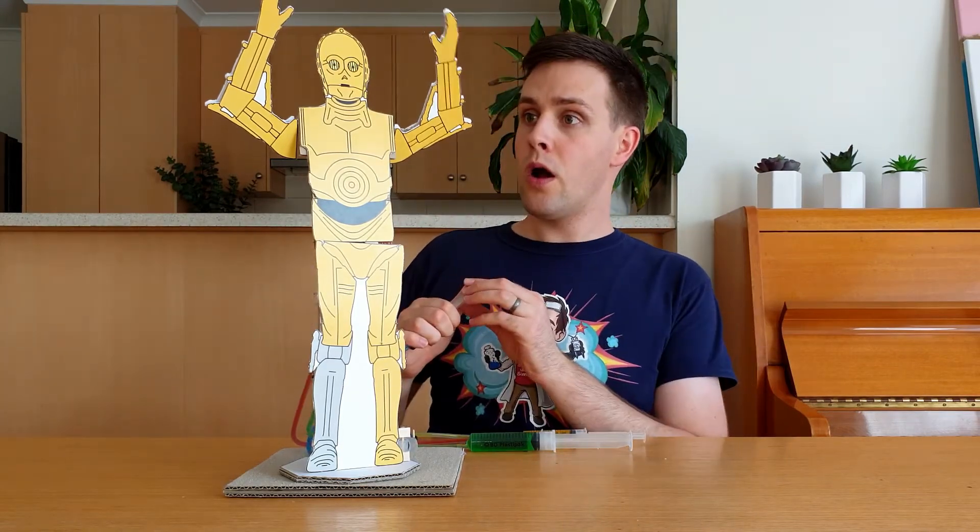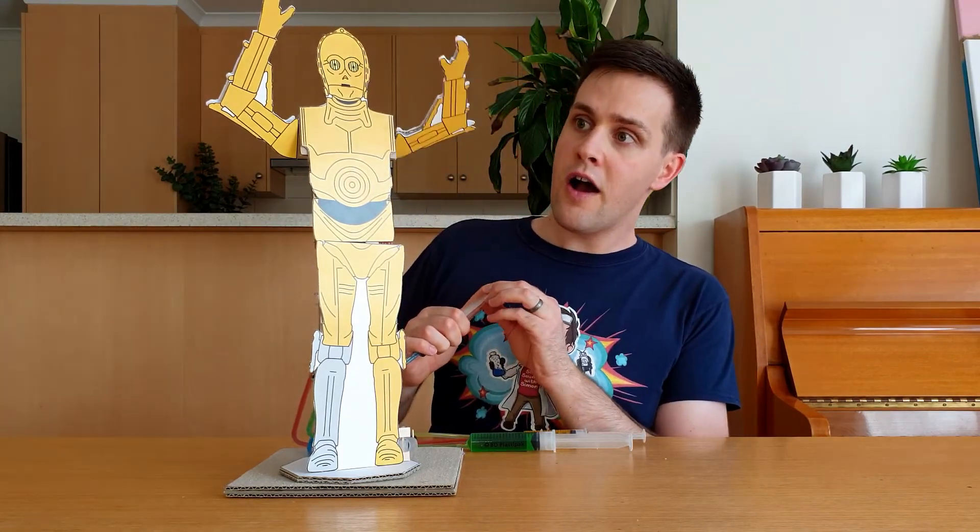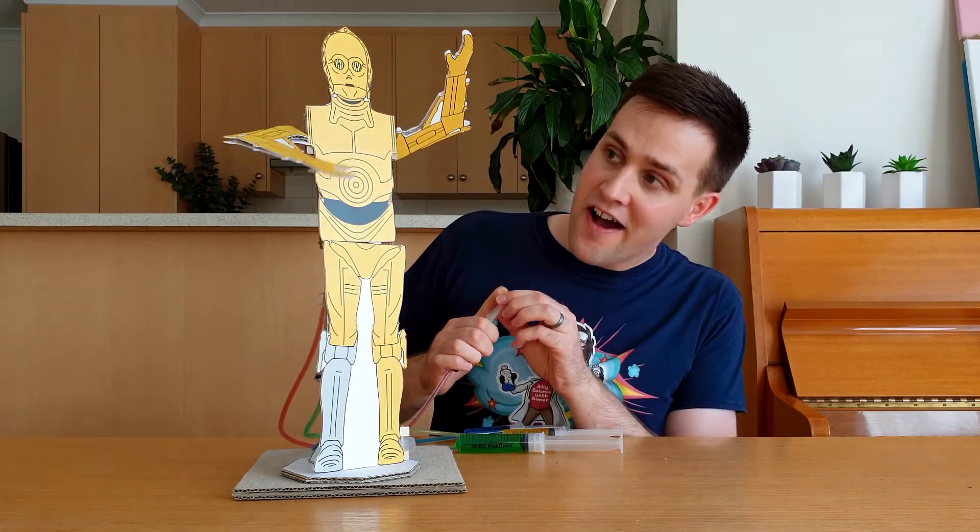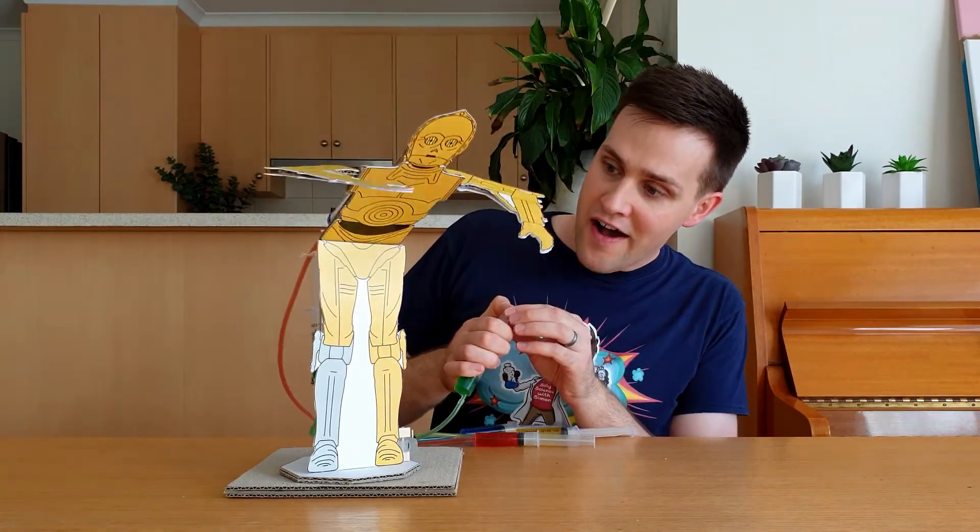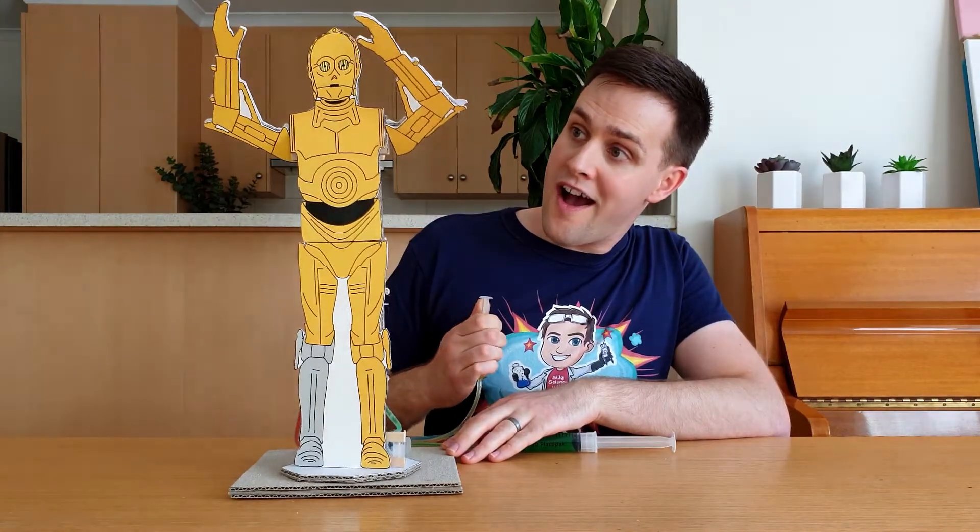C-3PO is ready to go. Let's test each piece. This is his left arm. This is his right arm. This is his waist. And this is his whole body.